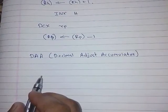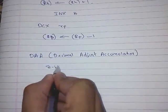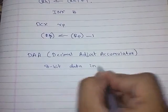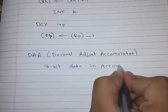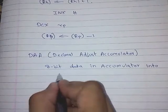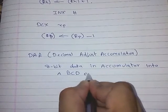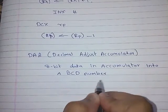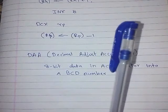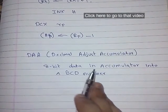The DAA instruction allows conversion of 8-bit data in the accumulator into a BCD number. I will put a link to the tutorial where I have explained the DAA instruction in detail.